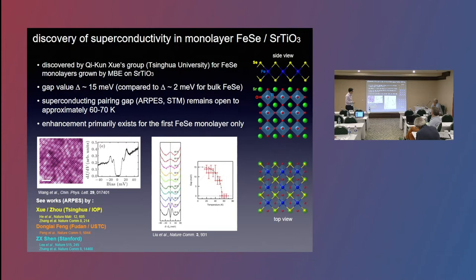Later, photo-emission studies showed that this pairing gap, about 15 MeV, remains open to about 60 or 70 Kelvin. That's data from I Ching-Jung Zou's group. And it was also shown by Chi-Quin Shi's group that this enhancement only really exists for the first monolayer. This spectroscopic work has been reproduced by a number of groups, including ourselves, and it's all quite consistent. There's not a lot of controversy there.